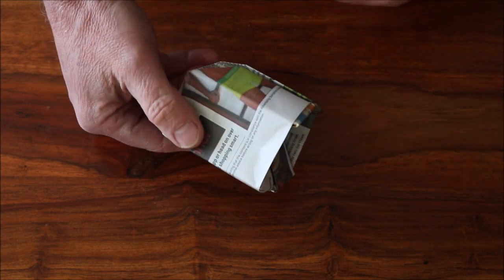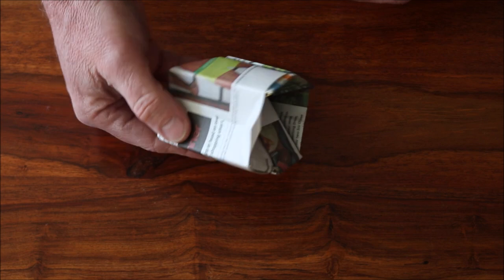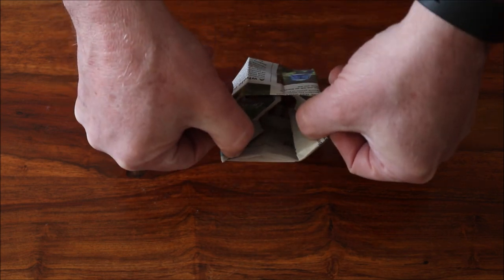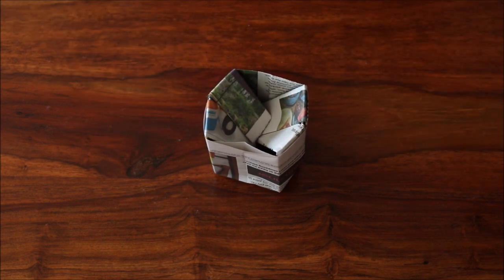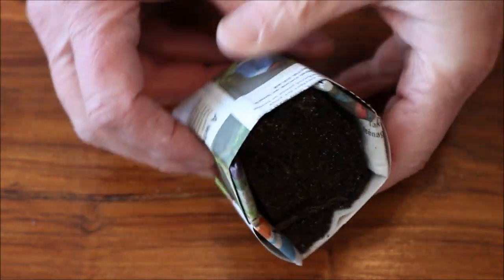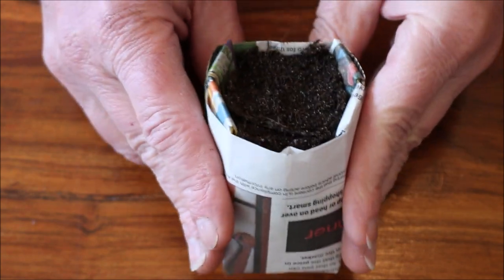That's the pot finished, it's quite strong as there are at least two layers of paper on any edge. Fill the pot with soil or compost and that will hold the two loose flaps in place inside.